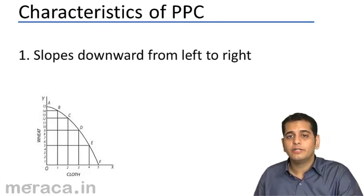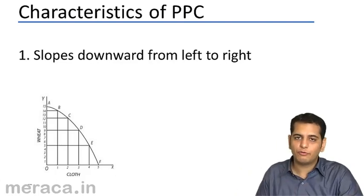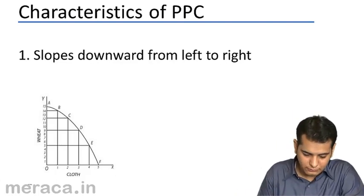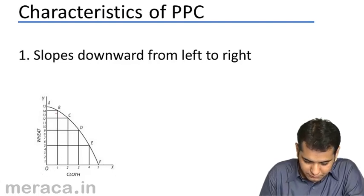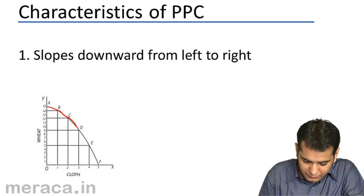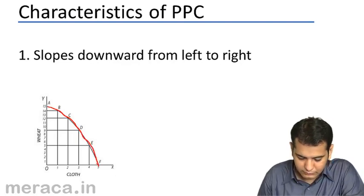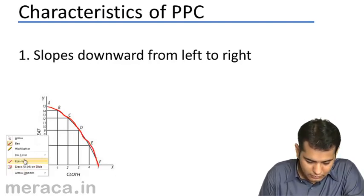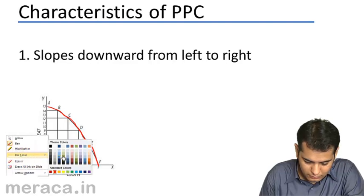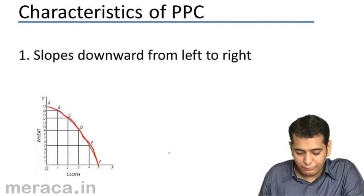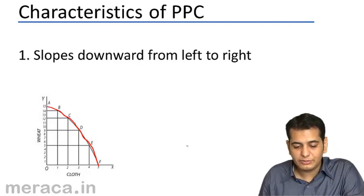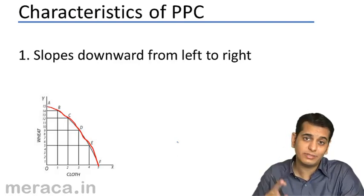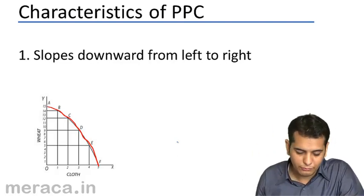PPC would always slope downward from left to right. Now, please take a close look here. This is my PPC and if you notice that when we are at combination A, we are not producing any units of cloth but we are producing 15 units of wheat.